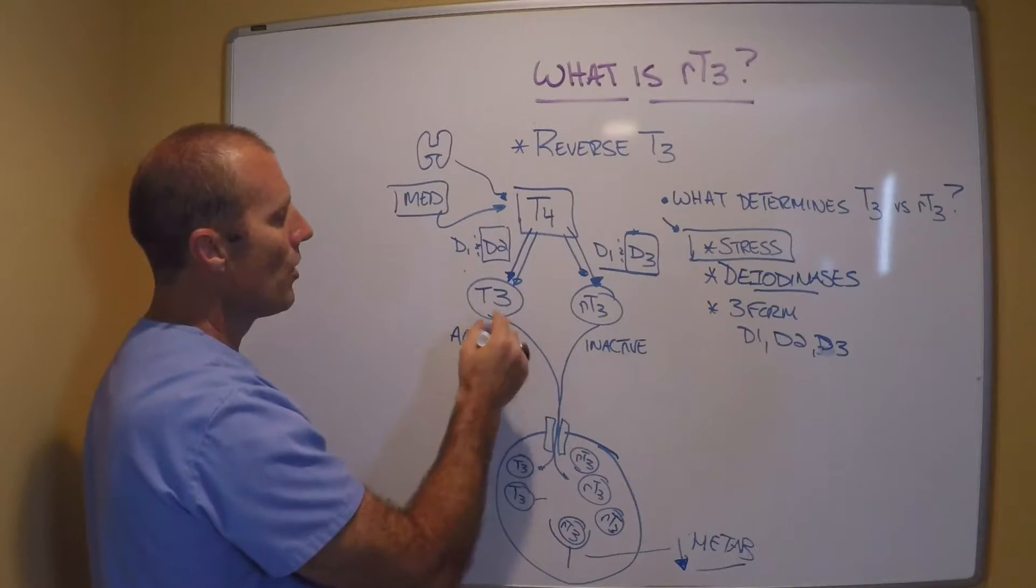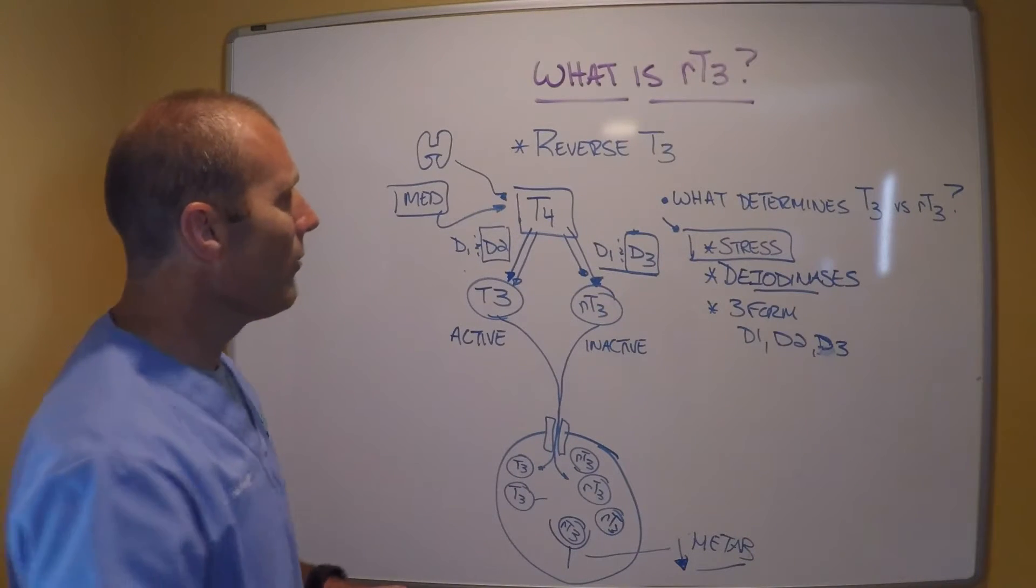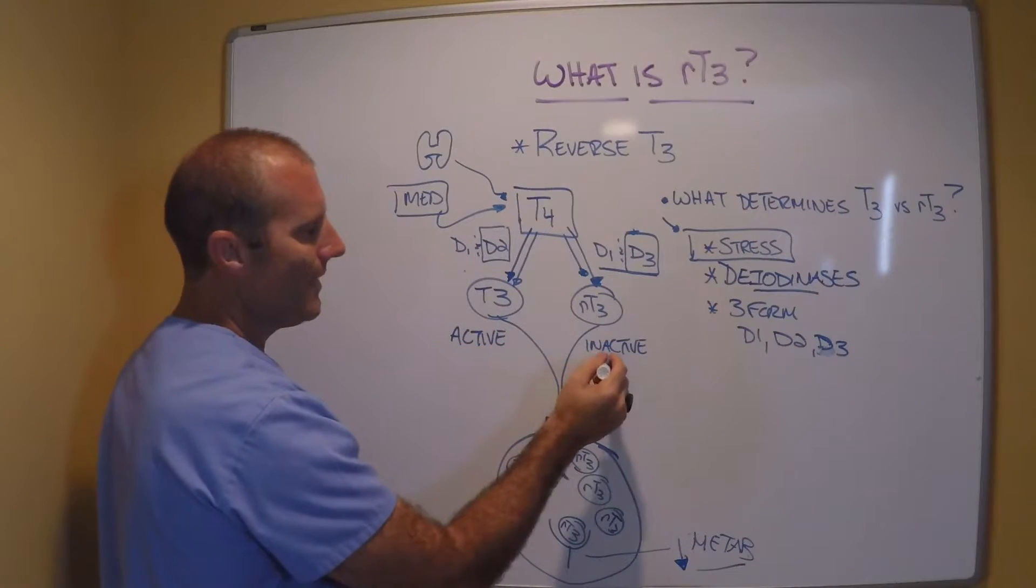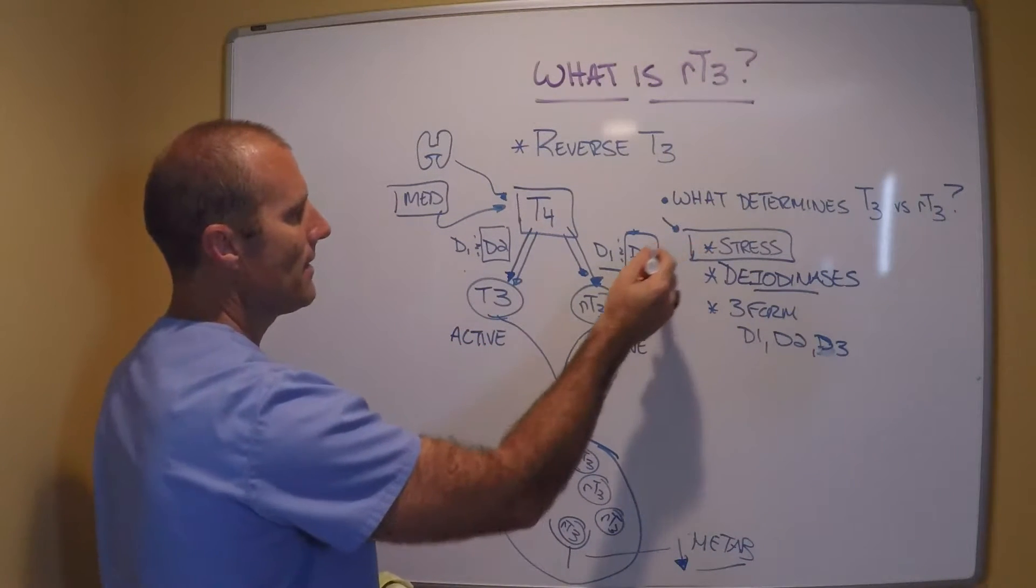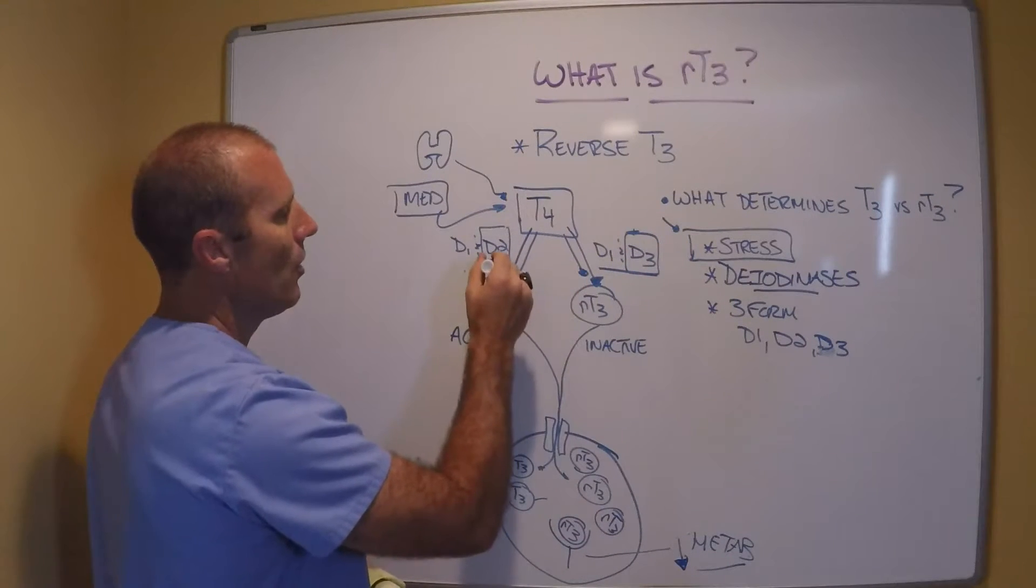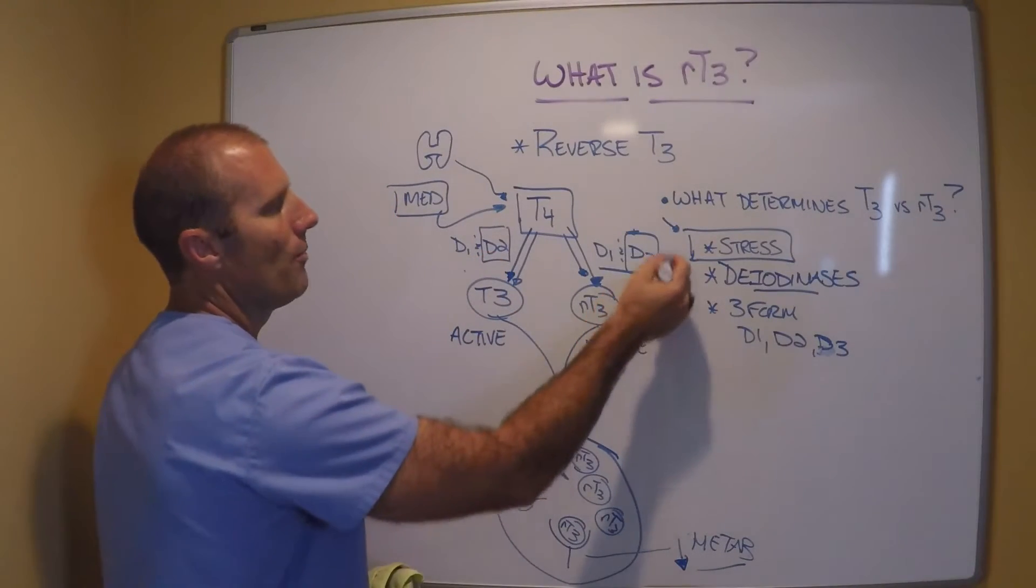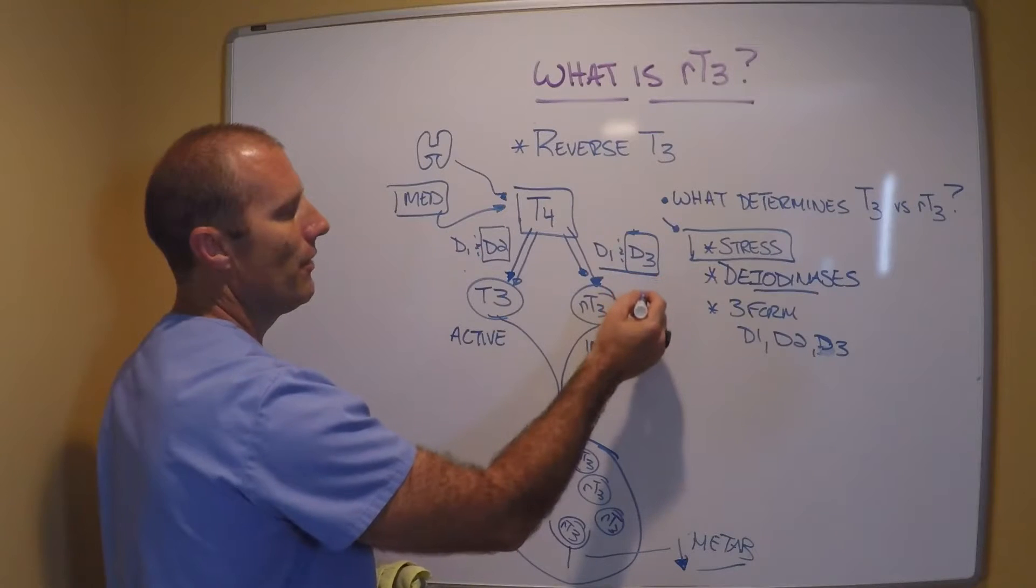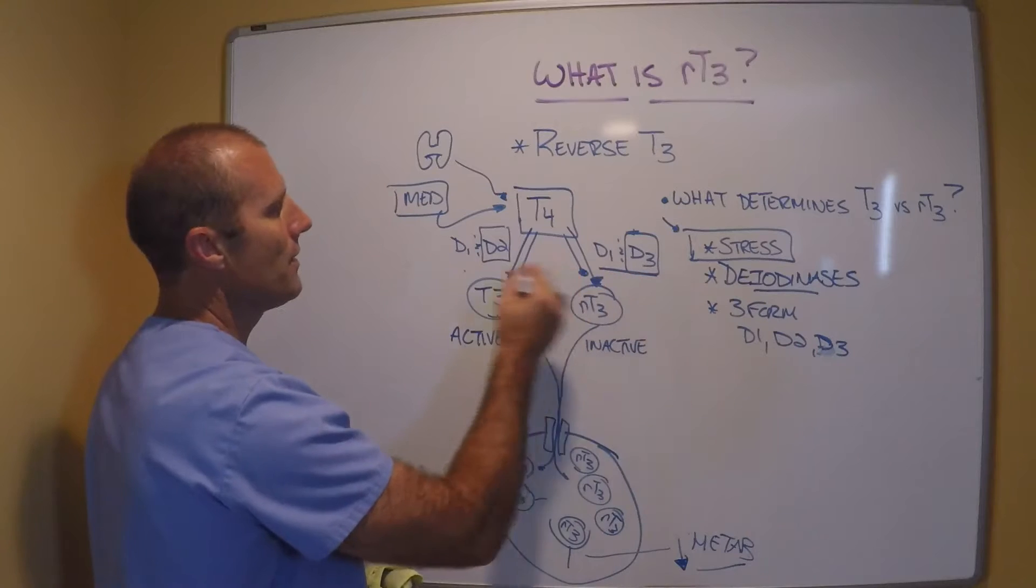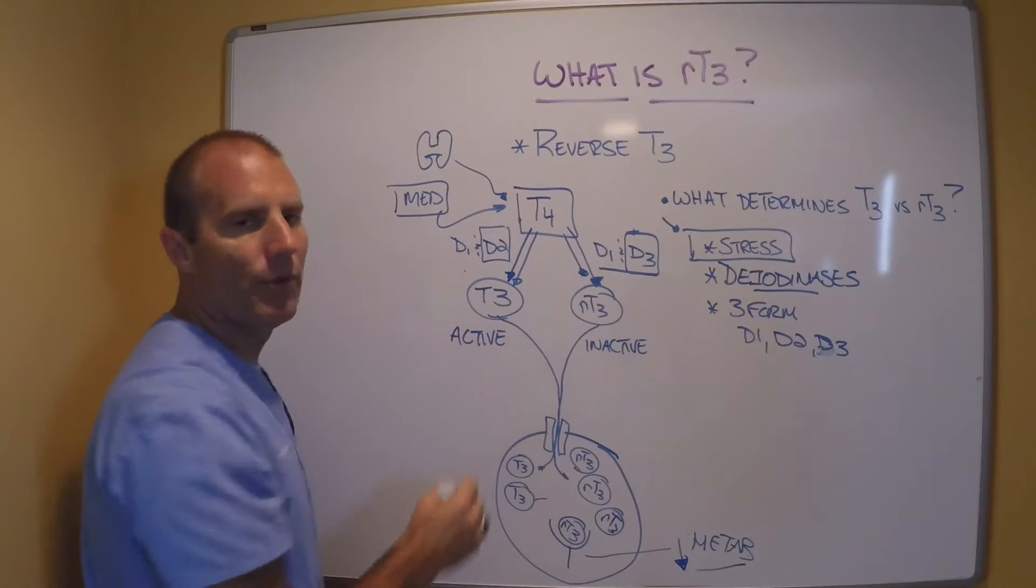And I'm going to get more T3 hormone produced. So what really determines whether I get more active versus inactive hormone comes down to stress and its impact at the cellular level on whether I get more D2 and more conversion to T3 or my cells producing more D3 or activating more D3 to convert T4 to reverse T3. Whichever one of these I'm getting more of, more likely I'm going to get that type of thyroid hormone.